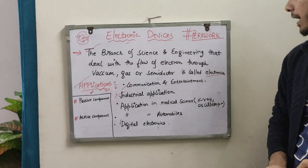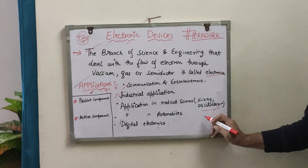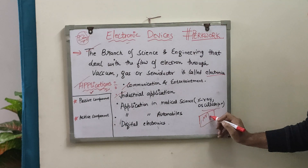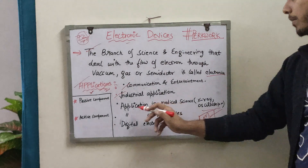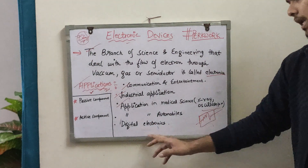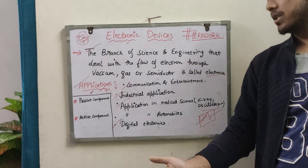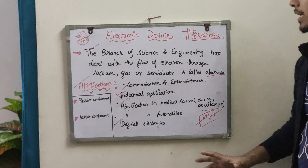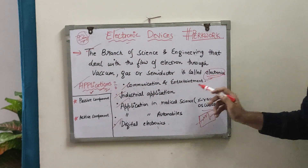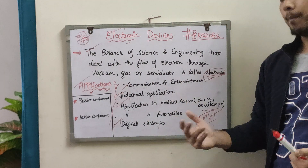Phir aadha application in medical science — humaare paas X-rays hain aur oscilloscopes hain. Oscilloscope ek aisa device hota hai jis pe hum heartbeats dekh sakte hain. Uske baad application in automobiles, aur digital electronics — digital clocks, digital watches, jitni bhi cheezein hain saari digital electronics hi hain. Yeh basic cheezein thi jo electronic devices mein pehle aati hain — what is electronics aur uske applications.